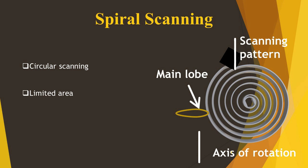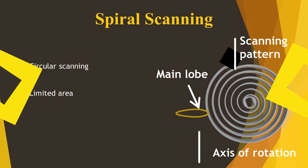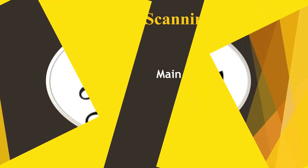Spiral scanning is similar to circular scanning. The scanning is done using a main lobe and the axis of rotation is limited to a defined area. Thank you.